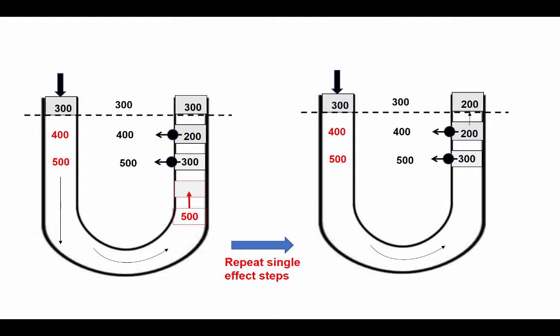Continuing our explanation, the fluid at the level in the descending limb that has an osmolality of 500 milliosmoles will be pushed down by mass action of the flowing fluid. It will go around the loop of Henle.